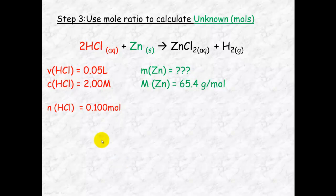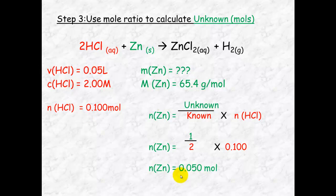We now use the 0.1 mole and look at the mole ratio between the hydrochloric acid and the zinc. 2 mole of hydrochloric acid reacts with 1 mole of zinc. So number of mole of zinc will be unknown over known times the number of mole of hydrochloric acid. So we've got 1 over 2 times 0.1 mole which equals 0.050 mole. I always like to look at this point to check 2 to 1. This is 0.1 so this has to be less. It has to be a half. Yes it is.